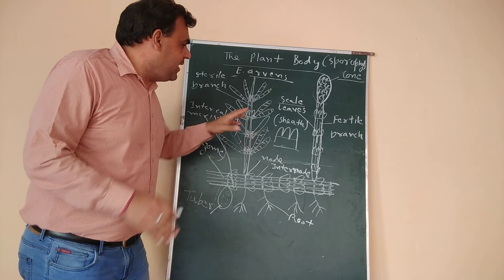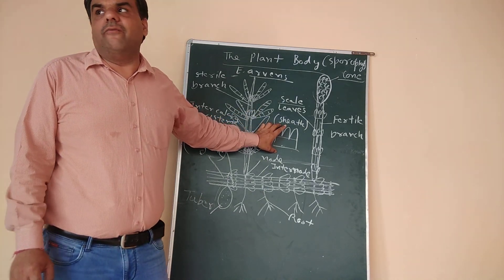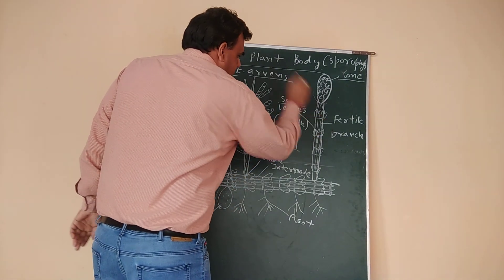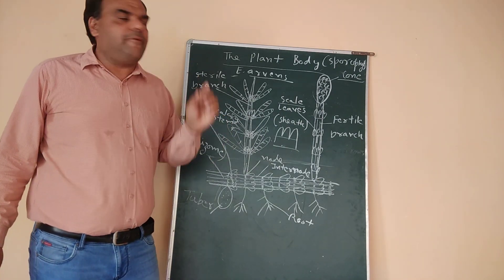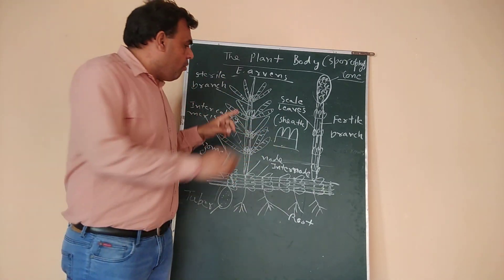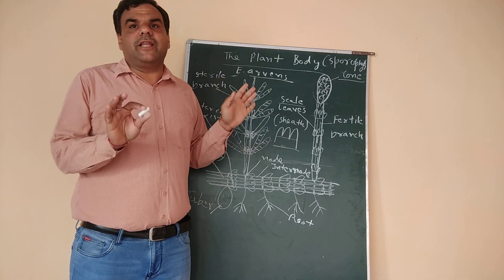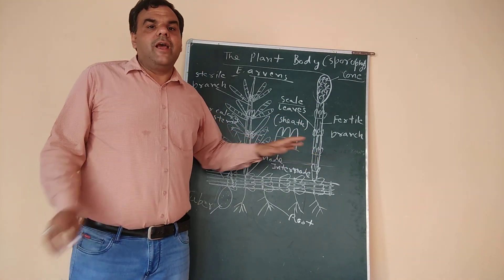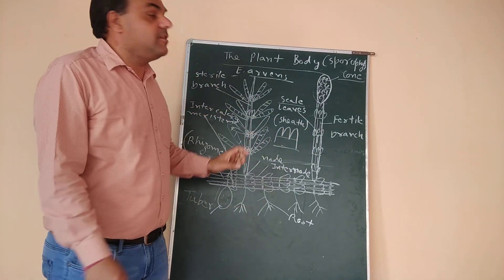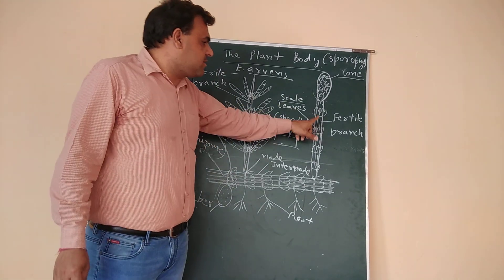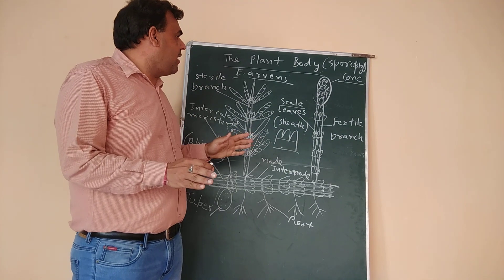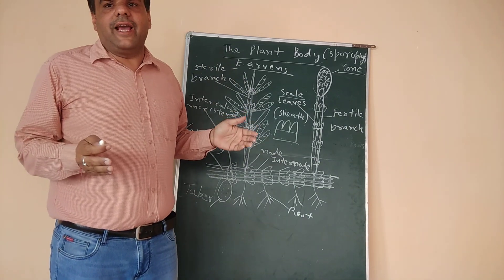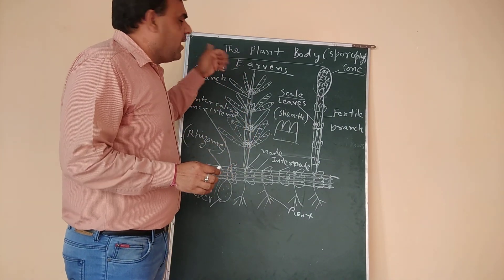The leaves of Equisetum are not involved in photosynthesis. The photosynthesis is done by the stems. The leaves are small and only protect the node and the intercalary meristem. Photosynthesis occurs by the stem of Equisetum. This is the external morphology of Equisetum. Tomorrow we will explain the internal morphology of Equisetum.